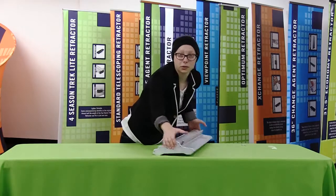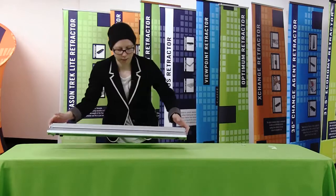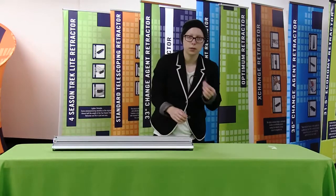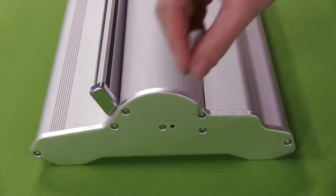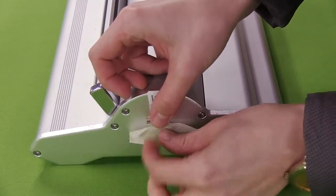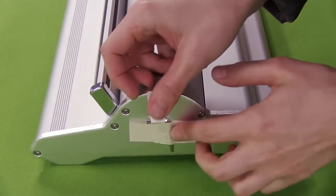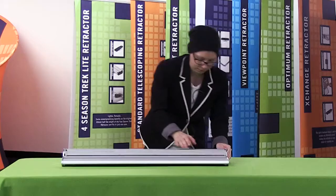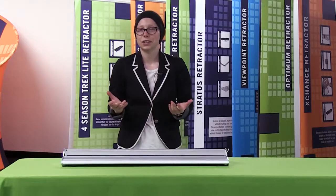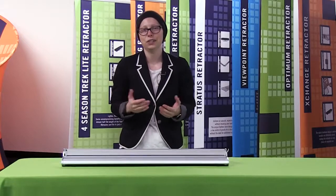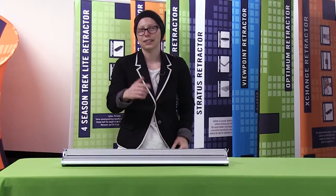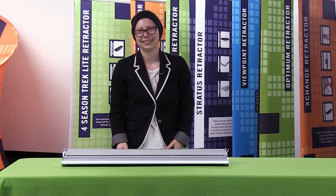Once the graphic has retracted back into the base, the last thing I'm going to do is tape my key to the side of my retractor base. It is just that easy to change out your Change Agent retractor graphic. I'll see you next time for another Quick Tip Tuesday.